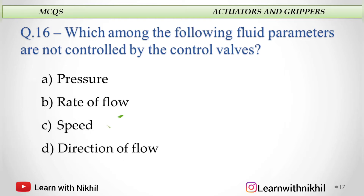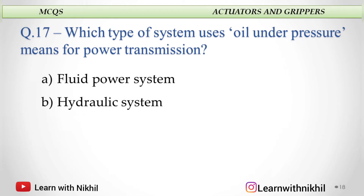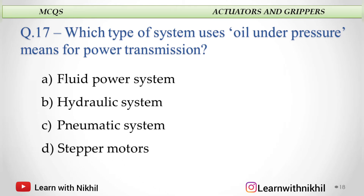Which type of system uses oil under pressure as a means of power transmission? A. Fluid power system, B. Hydraulic system, C. Pneumatic system, or D. Stepper motor? And the answer is hydraulic system.